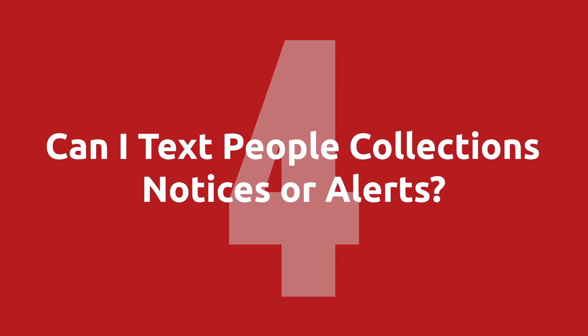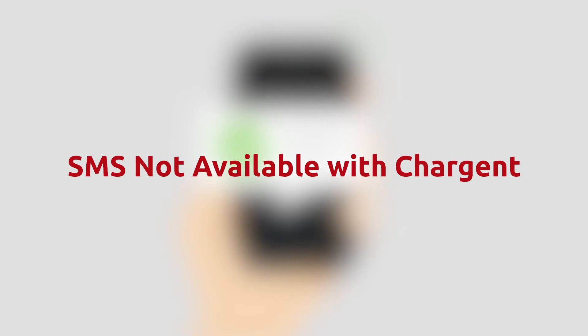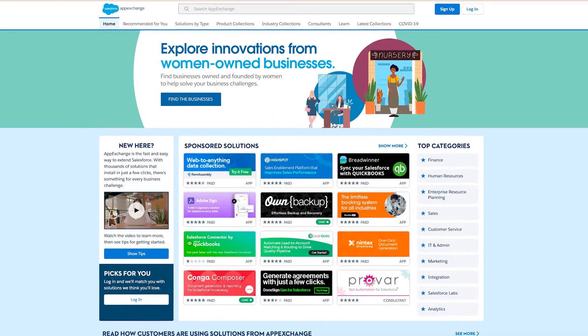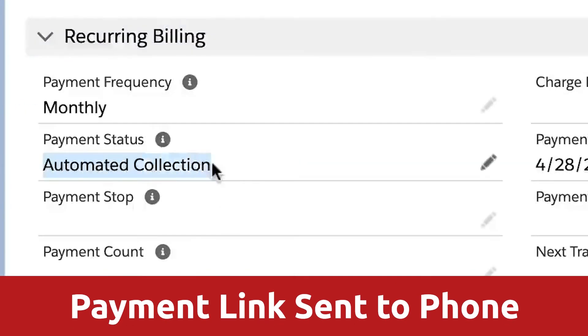Question four: can I text people collections notices or alerts about failed payments? Yes, you can. Notably, SMS is not part of Chargent out of the box, but there are a variety of third-party SMS apps on the Salesforce AppExchange. Using SMS apps, you should be able to send a template with the payment request link Automated Collections generates right to your customer's cell phone. Talk to your Salesforce administrator or consultant to learn more about the implementation and options of SMS apps for Salesforce.